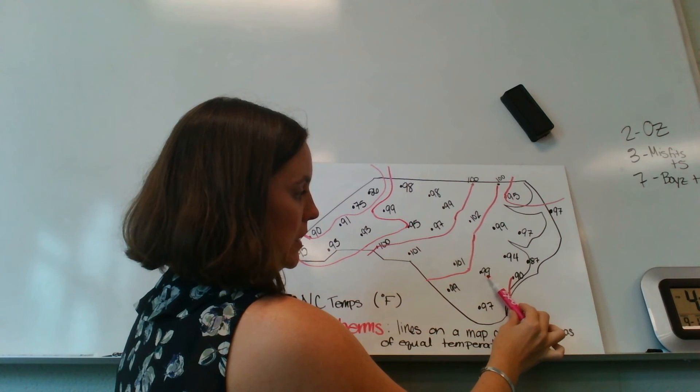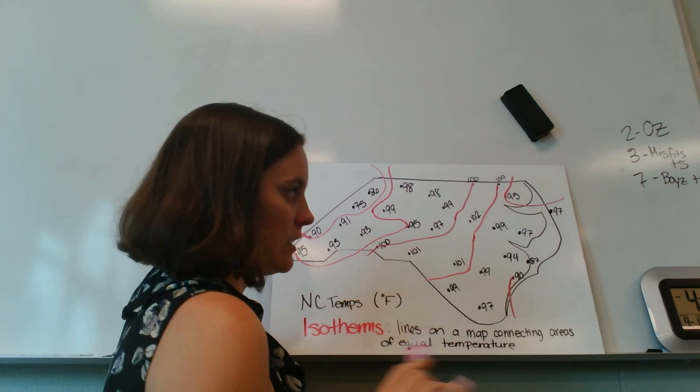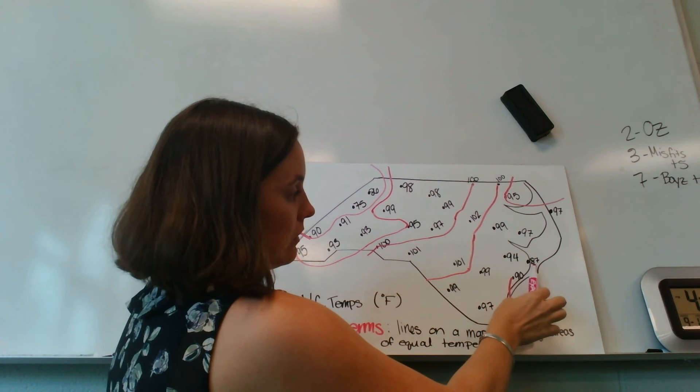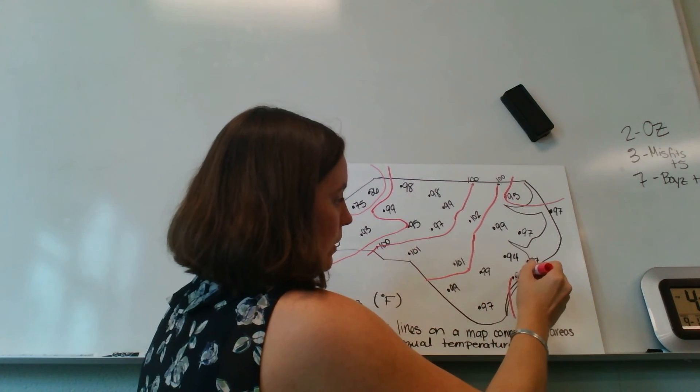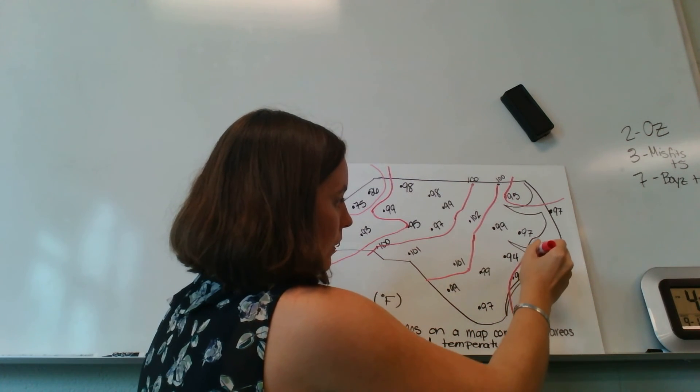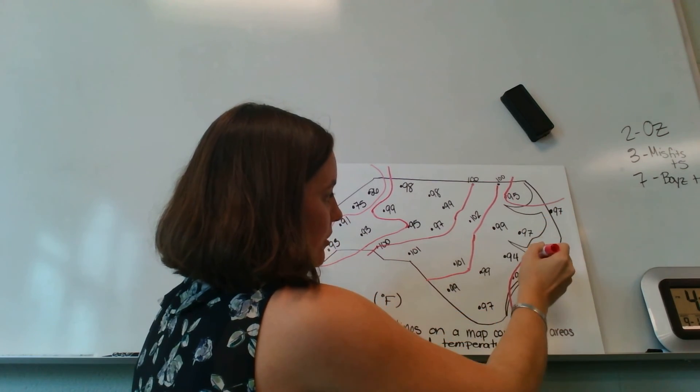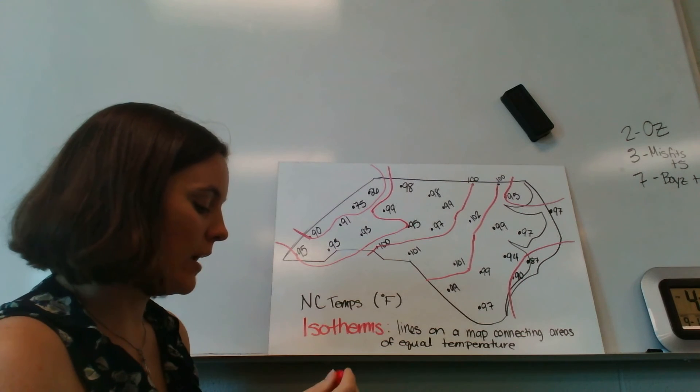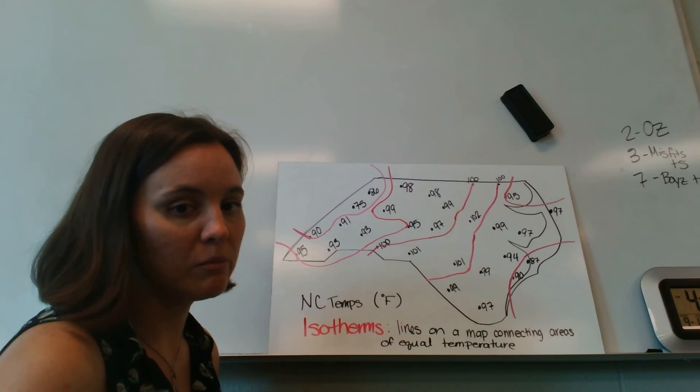90 does not go between 99 and 94. It's definitely not there on a number line, but 90 does fall between 94 and 87. So I can go up that way. And then I just have much higher temperatures. So I go out that way.